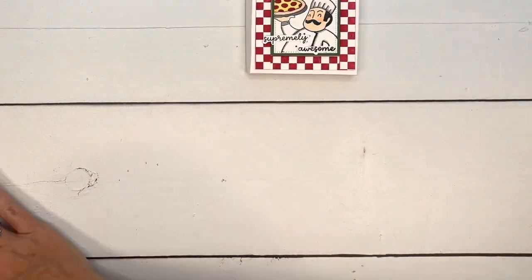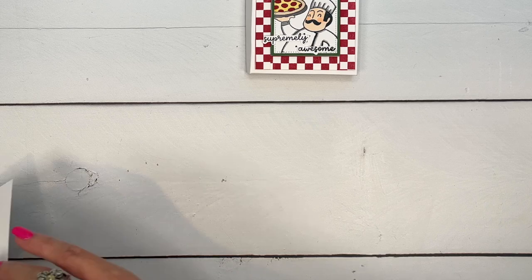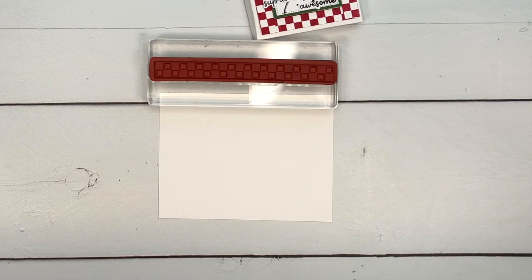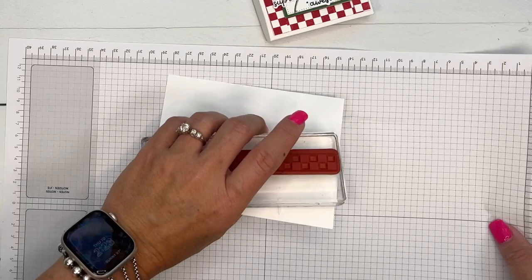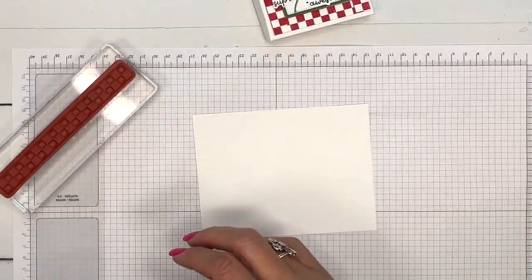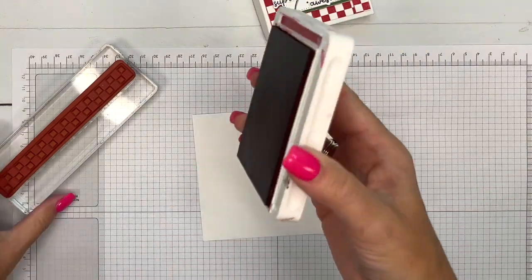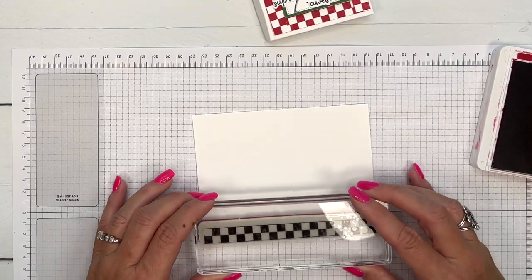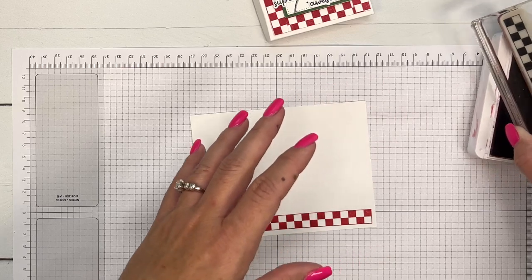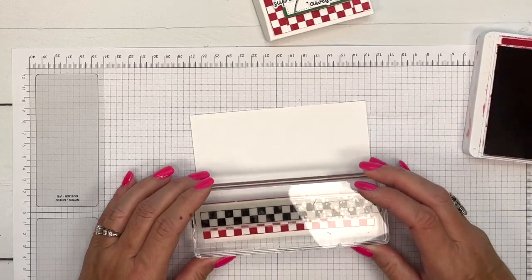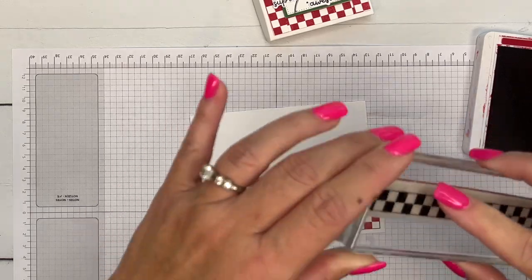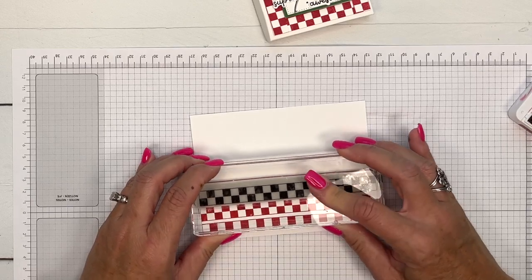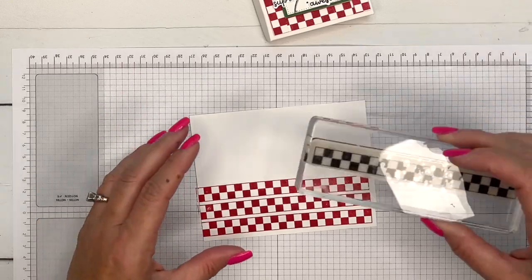Now we're going to make this checkered border by stamping our long piece four times. Let me bring over some red paper and I'm going to do it in real red. I'm just going to start at the bottom. They don't have to be straight because we are cutting them apart, but it makes it easier for your cutting if you get them close together. All right, so you're going to want to do four of them.